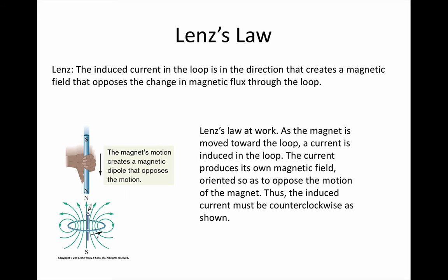We can illustrate Lenz's law with the experiment shown in the diagram, with a loop of wire and an approaching magnet. The approaching magnet means an increasing magnetic field strength, with the field pointing downwards away from the north pole of the permanent magnet.